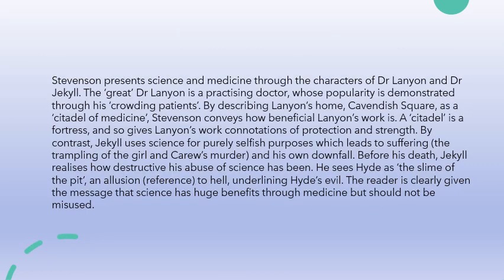Here's my model paragraph. Stevenson presents science and medicine through the characters of Dr. Lanyon and Dr. Jekyll. The 'great Dr. Lanyon' is a practising doctor whose popularity is demonstrated through his 'crowding patients.' By describing Lanyon's home, Cavendish Square, as 'a citadel of medicine,' Stevenson conveys how beneficial Lanyon's work is — the citadel is a fortress, giving his work connotations of protection and strength. By contrast, Jekyll uses science for purely selfish purposes which leads to suffering: the trampling of the girl, Carew's murder, and his own downfall. Before his death, Jekyll realises how destructive his abuse of science has been. He sees Hyde as 'the slime of the pit' — an allusion which references hell, underlining Hyde's evil. The reader is clearly given the message that science has huge benefits through medicine but should not be misused.